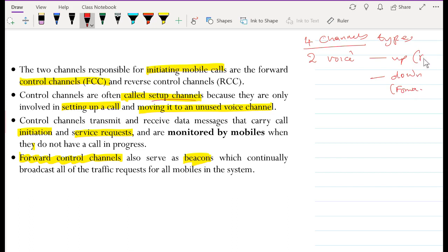The two channels responsible for initiating mobile calls are the forward control channels and the reverse control channels. The control channels are often called setup channels because they are only involved in setting up a call or moving it to an unused voice channel. We have four channel types. Two are for voice, one is for uplink, the other one is for downlink. After the voice, the second category is called control channels, the ones that control the setting up of calls and stopping the calls.